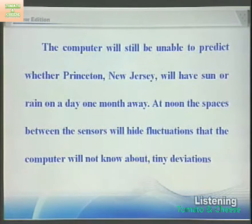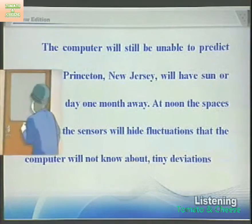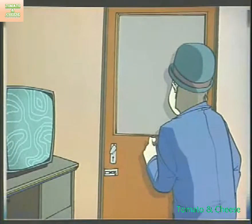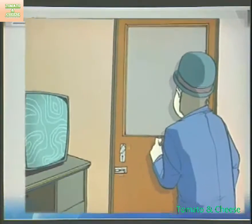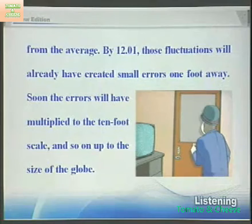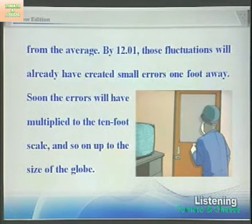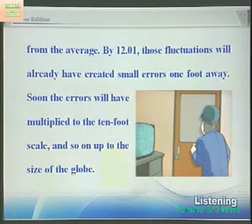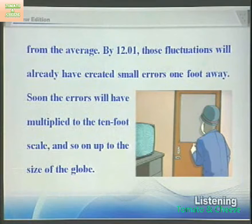At noon, the spaces between the sensors will hide fluctuations that the computer will not know about — tiny deviations from the average. By 12:01, those fluctuations will already have created small errors one foot away. Soon the errors will have multiplied to the 10-foot scale, and so on, up to the size of the globe.